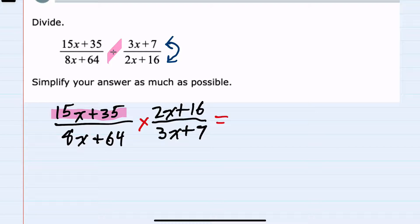15x plus 35, for those two terms they have a common 5 that we can factor out. Factoring out a 5 from 15x leaves us with a 3x, and factoring out a 5 from the 35 leaves us with 7.